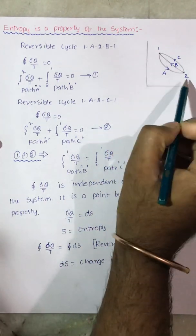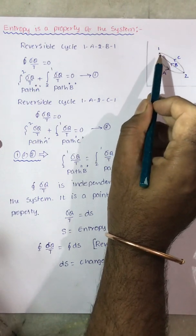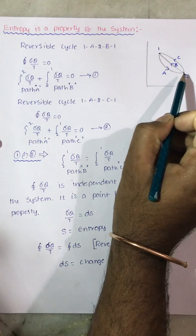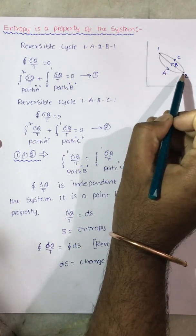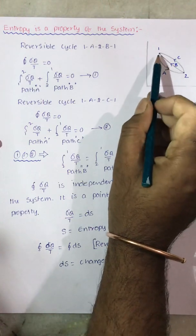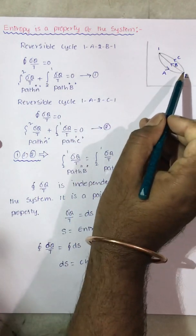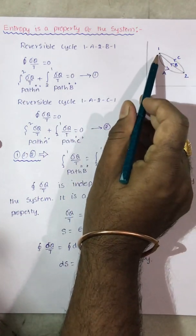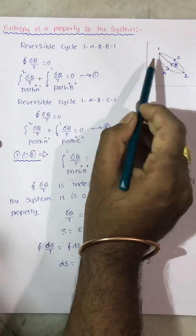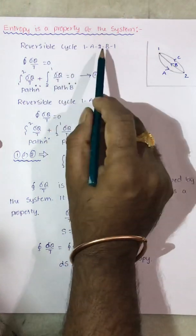Let us consider any thermodynamic coordinate in which initially the system is at state point 1 and it reaches the second equilibrium point, that is state point 2, by following path A. Now the system is following path A from state point 1 to state point 2, and the system is returning back to the same initial point 1 by following path B.